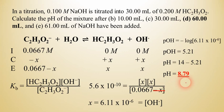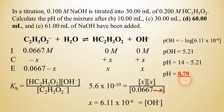So after a lengthy process, the pH at the equivalence point (60 mL) is 8.79. This makes sense: when you add a strong base to a weak acid, you would expect the resulting solution to be slightly basic. And that's what we have — a little bit over 7, close to 9.